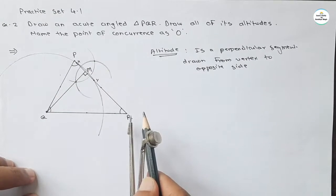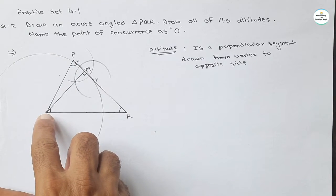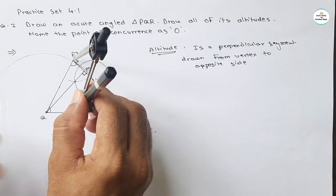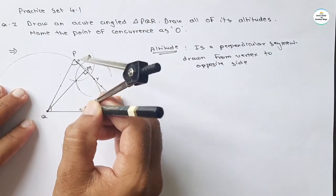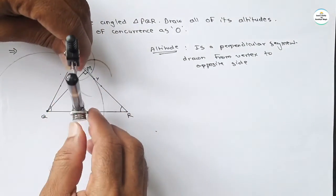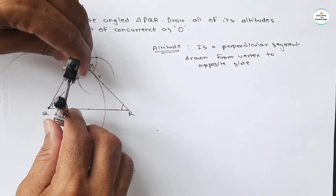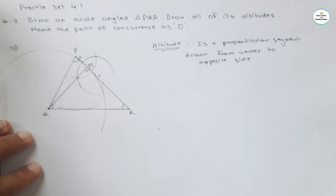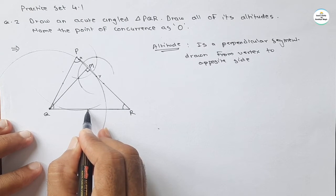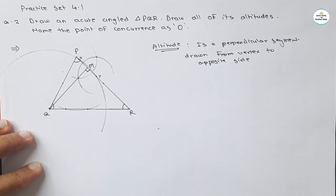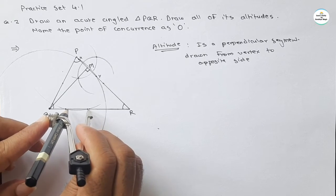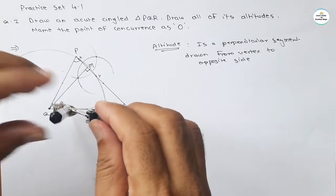Similarly, we will draw the altitude from P to the opposite side QR. The procedure is the same: take the compass and set a sufficient radius. Make an arc centered at P and cut the opposite side QR in two distinct points. These are the two intersecting points of the arc and segment QR.